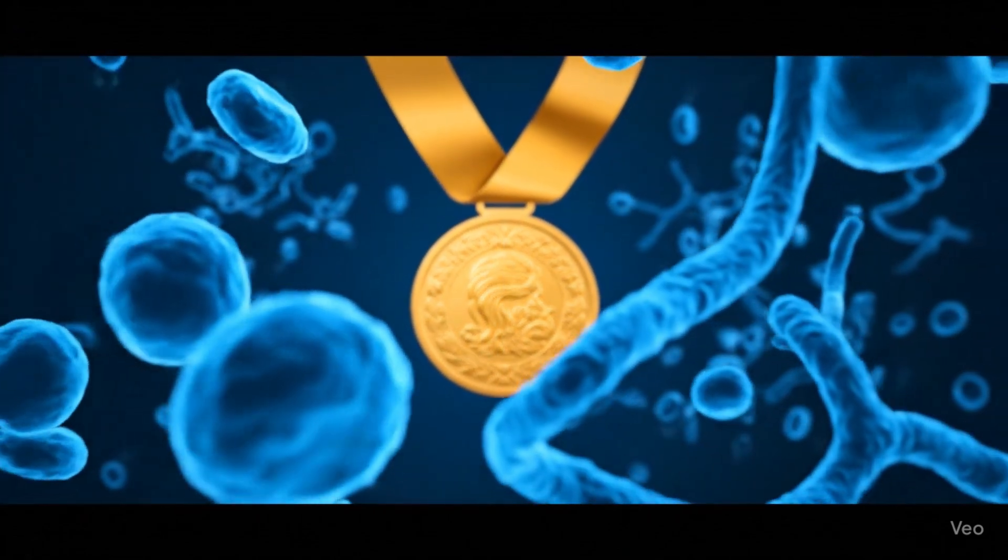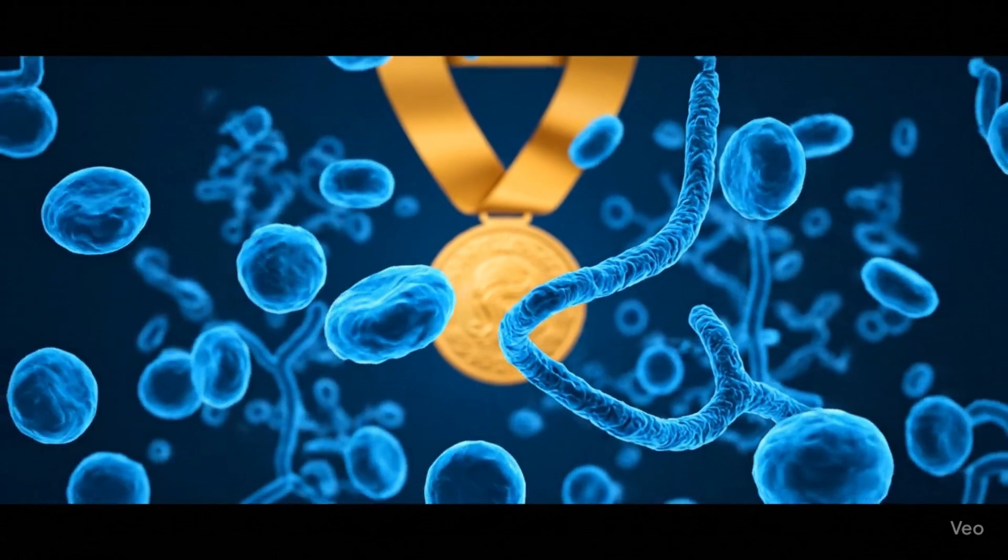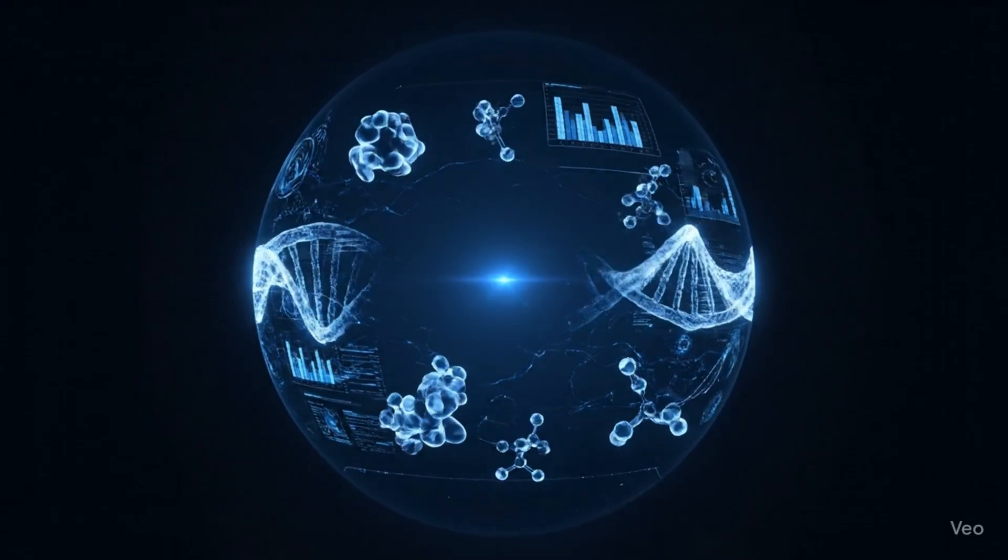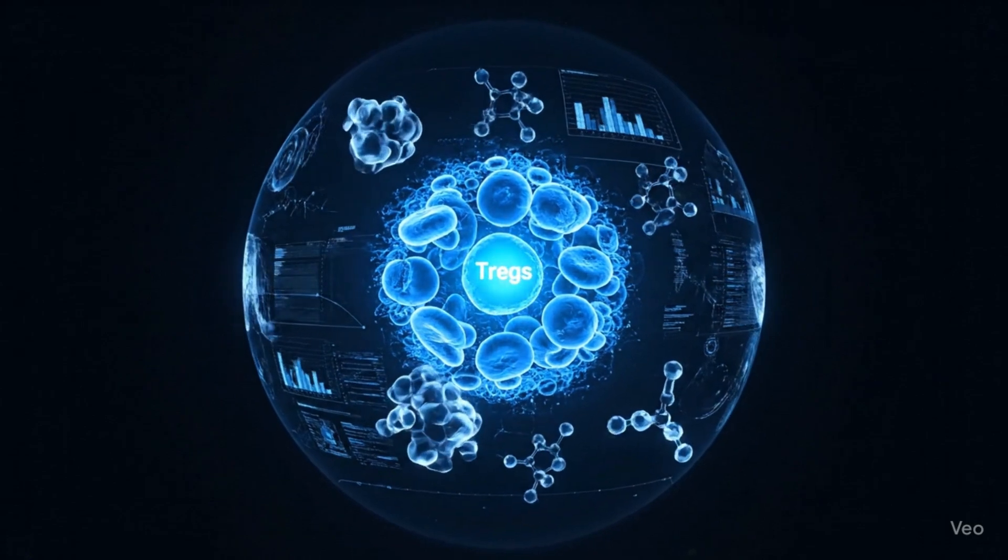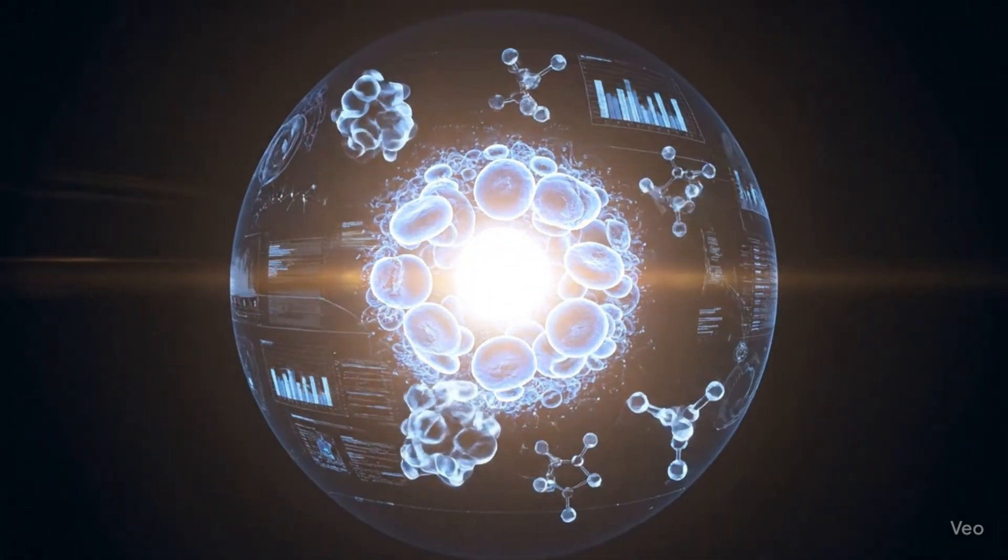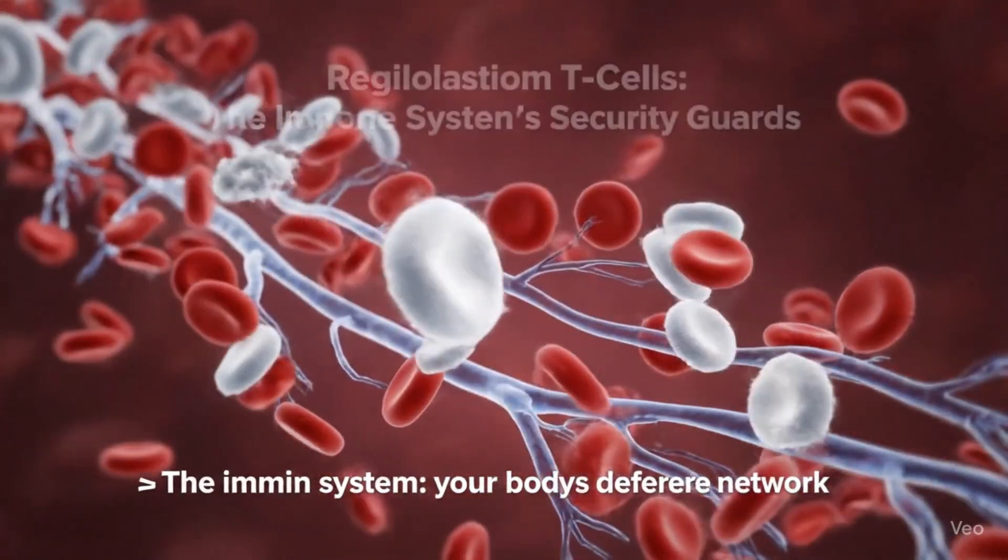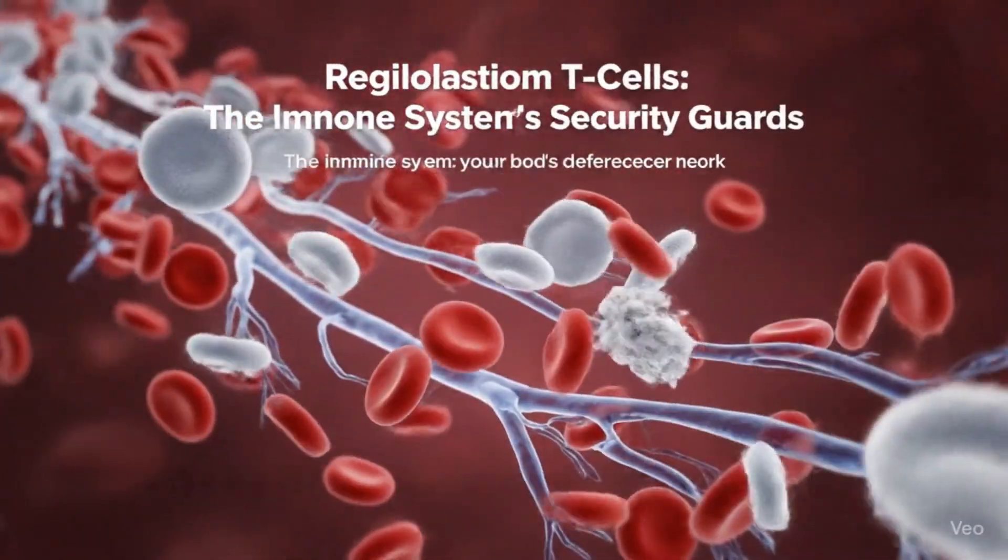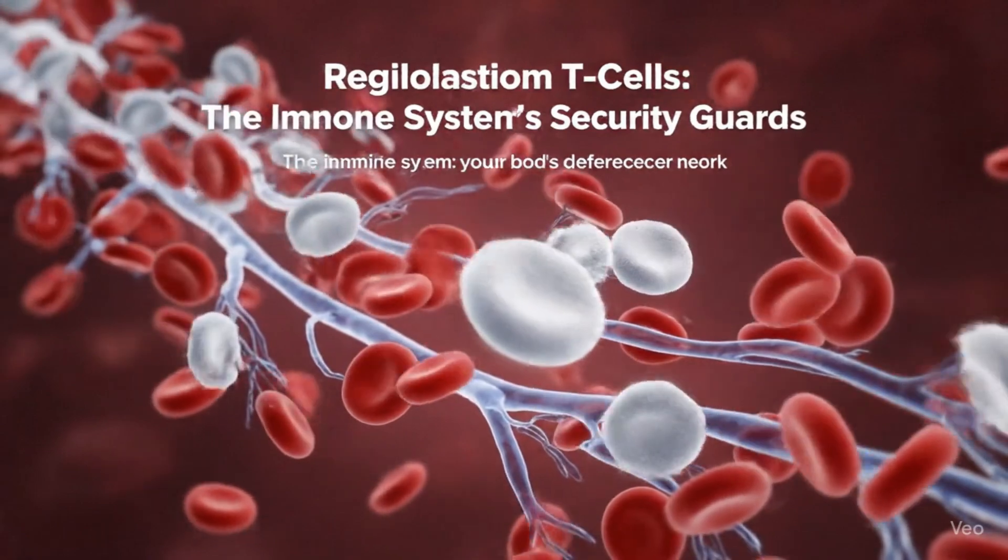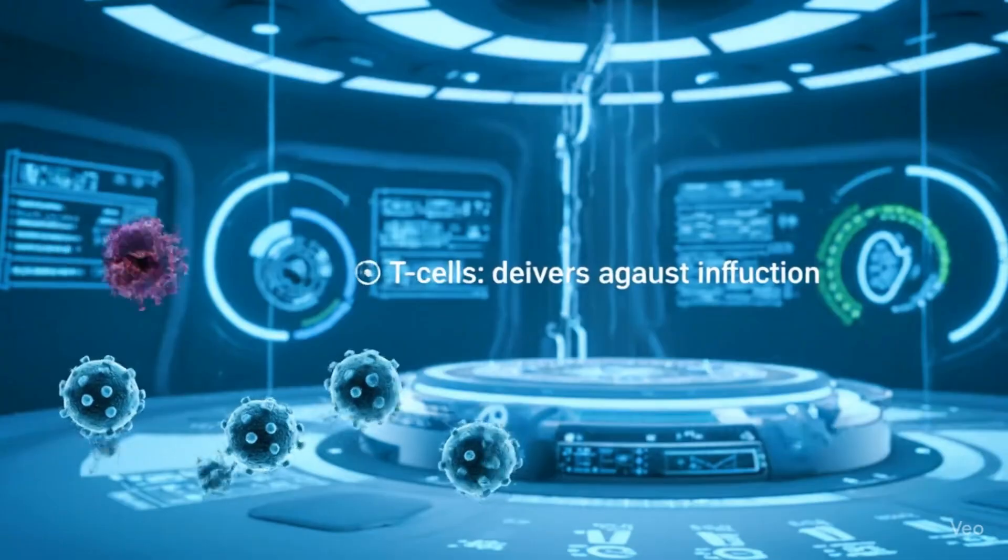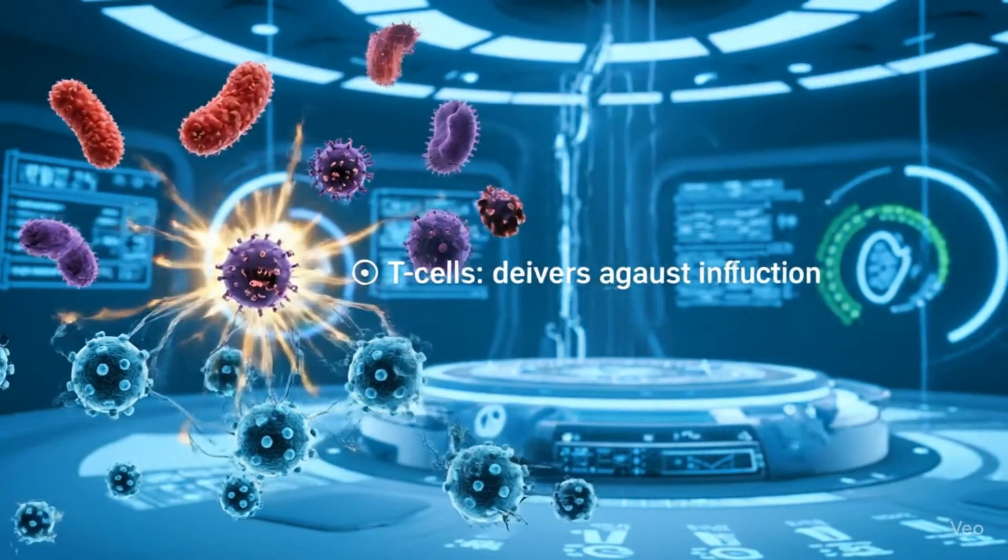Regulatory T-cells act like the security guards of this army. Their job is to keep the immune response under control, to calm things down when your defenses go too far. In simple terms, they make sure your immune system attacks only what it should and not your own healthy tissues.